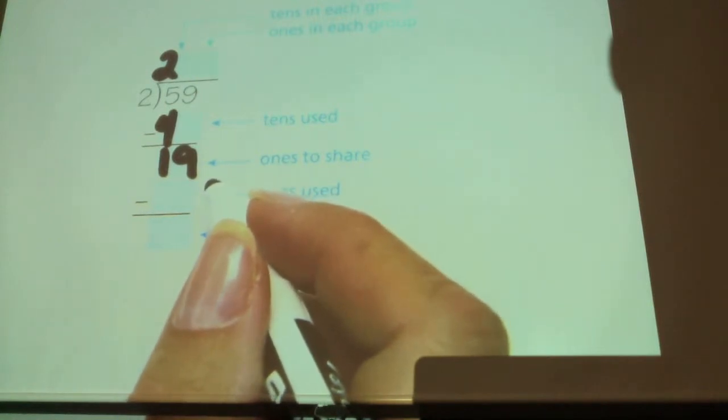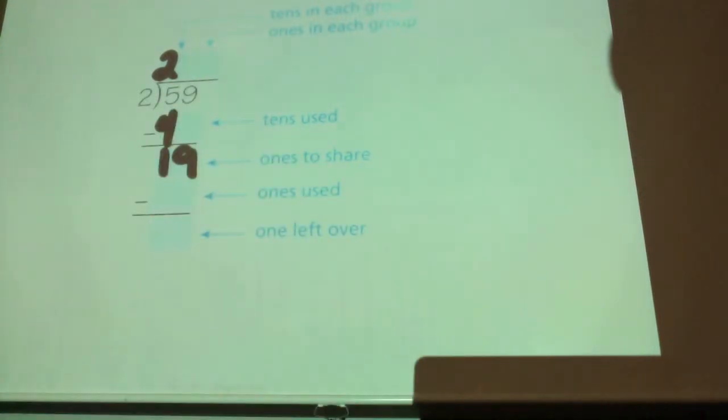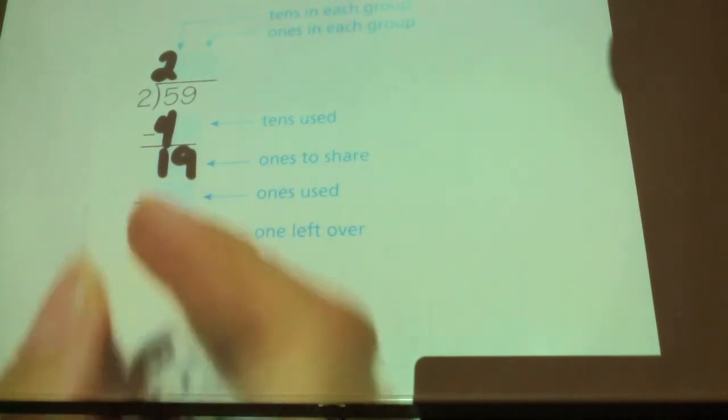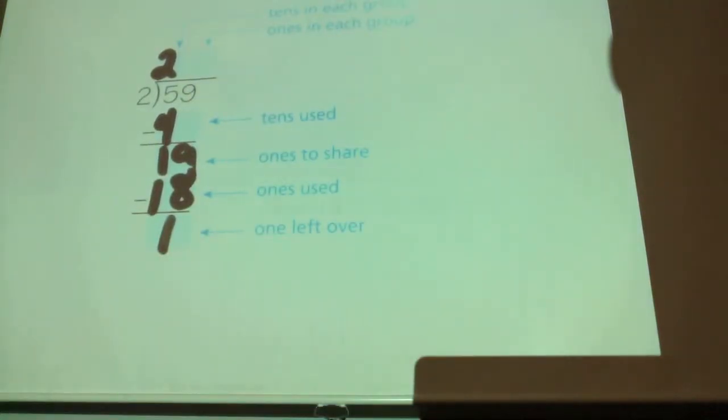Think about, if I had nineteen ones and two groups, how much can I use and how many are going to end up in each group? One or the other answer I'm looking for. How many I'm going to use? I have an odd number. So can I use all of them? No. How many are going to be left over? One, right? One's going to be left over because it's an odd number. So I know I'm going to have one left over.